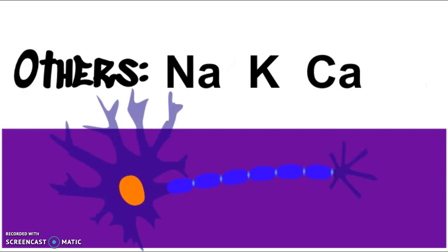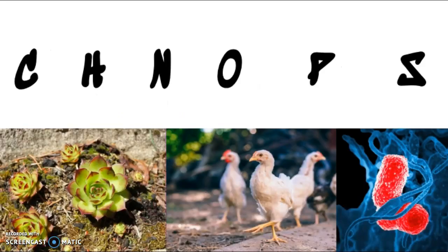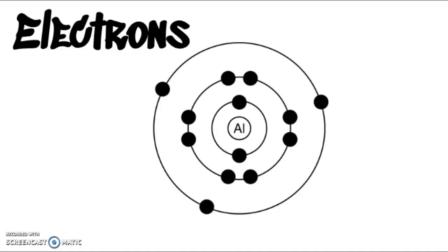There are a lot of other elements that are important in living processes, things like sodium and potassium and calcium. They're going to be important as ions, and we'll get to what ions are in a second. This will happen in nerve functioning and other biological signaling. But don't forget our big six.